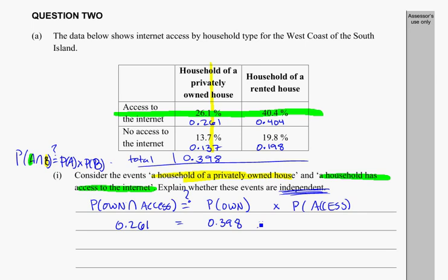Next, we need the probability that they have access to the internet. You can add totals across the rows as well. Adding those values together gives 0.566. Now we have both pieces of information we need.